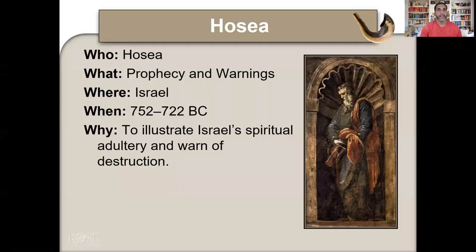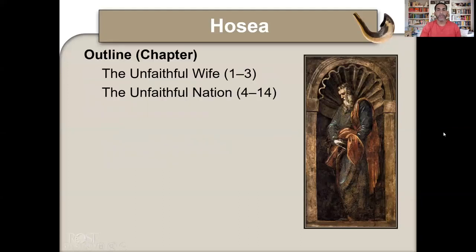The first one is Hosea. Hosea wrote prophecy and warning to Israel, from 752 to 722 BC, to illustrate Israel's spiritual adultery and warn of destruction. The outline of Hosea is the unfaithful wife — God tells Hosea to marry an adulteress who keeps cheating on him, and he goes back and buys her from the marketplace. That's an illustration of how unfaithful Israel was. And then the unfaithful nation.